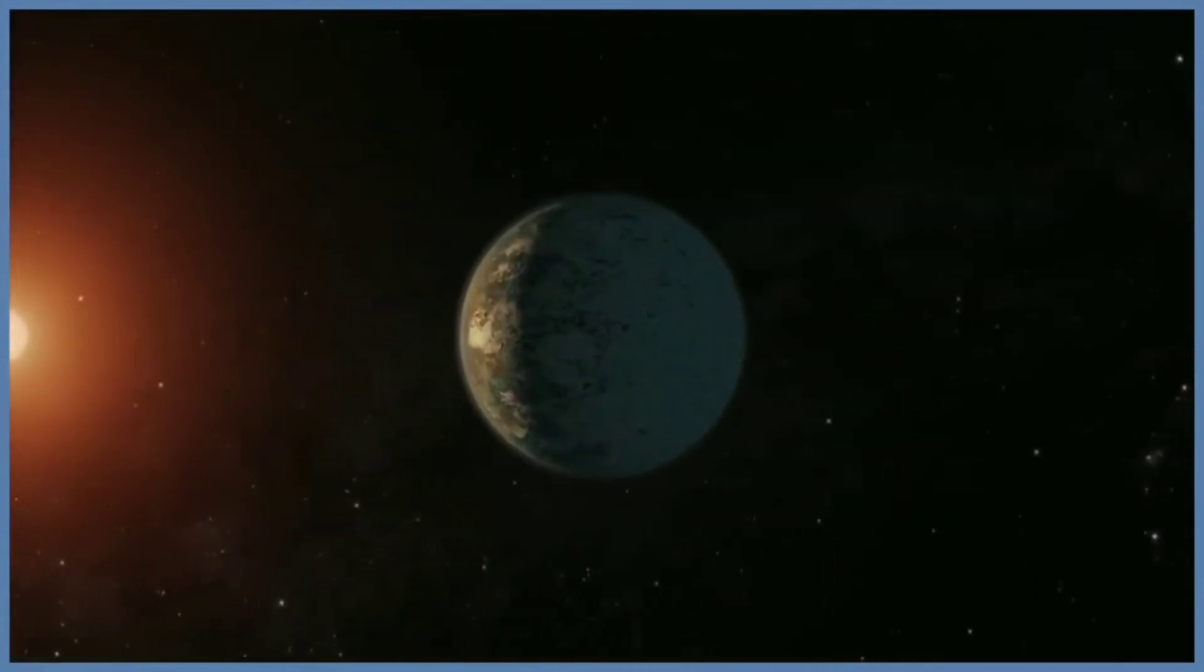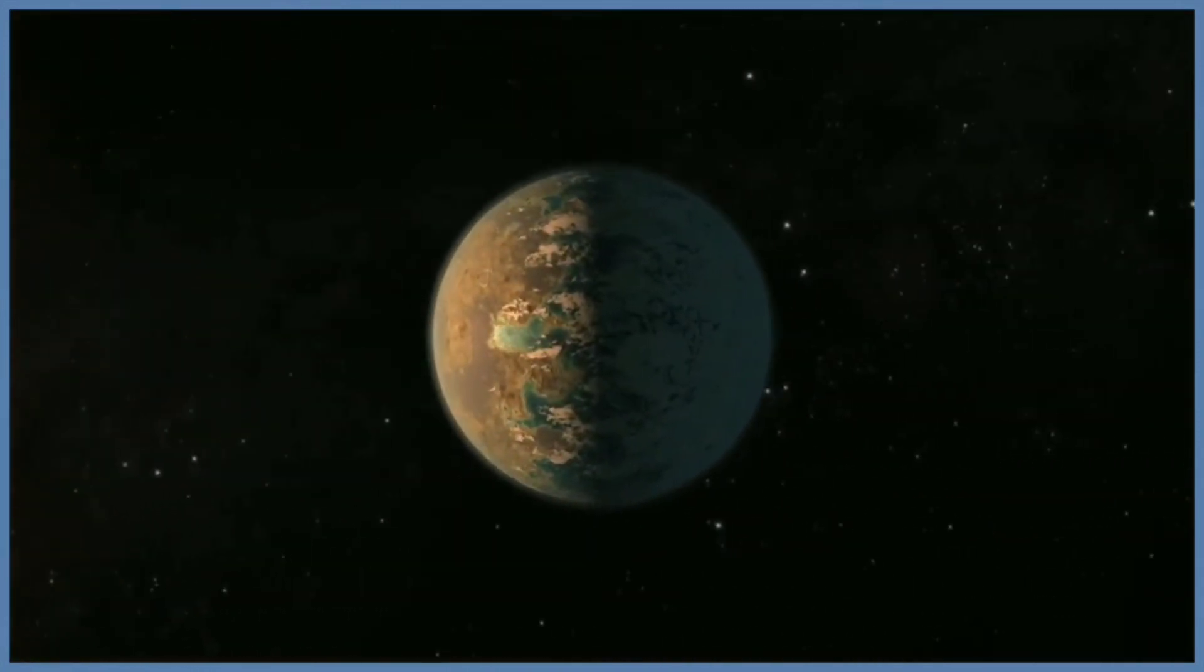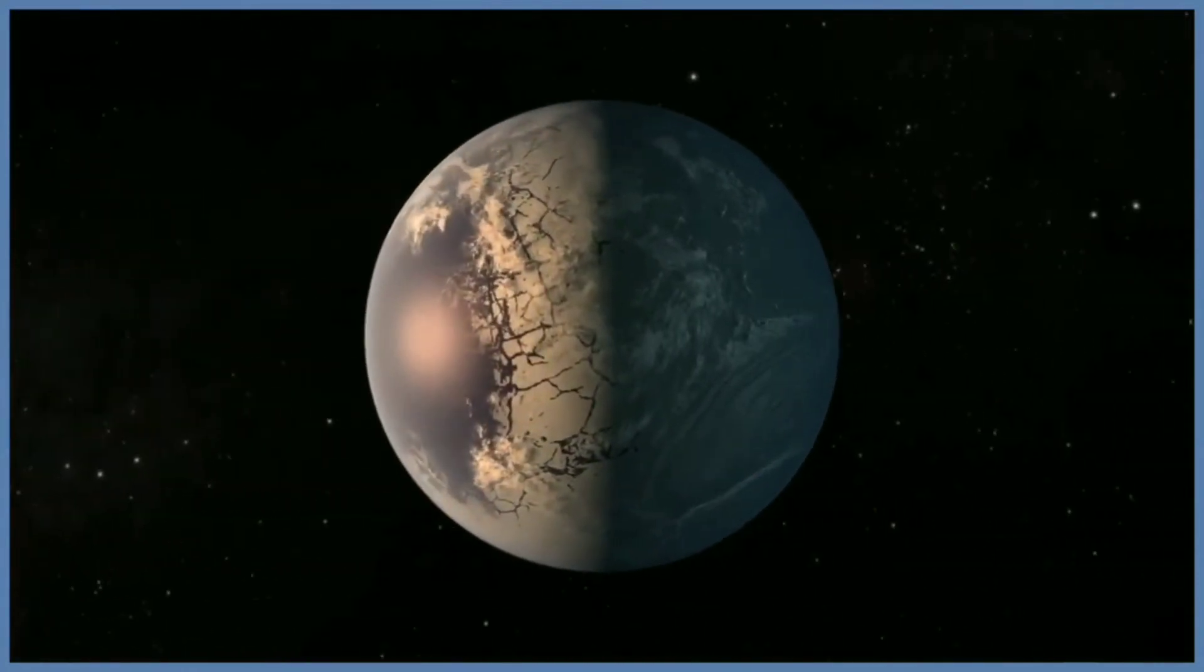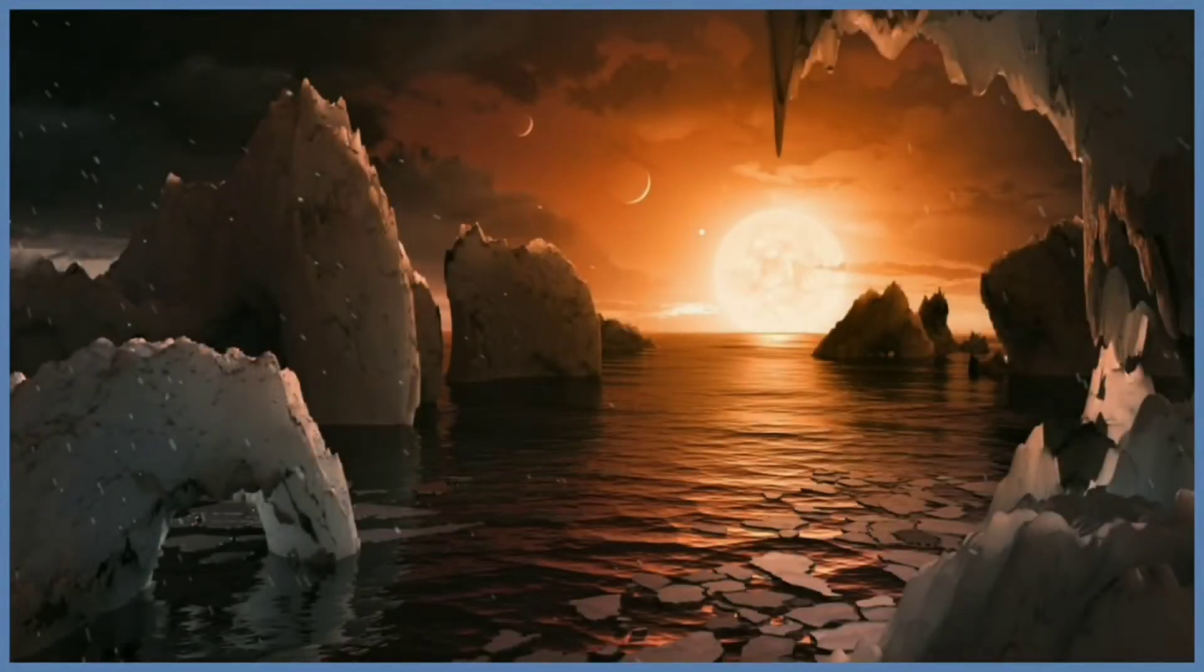The planets may also be tidally locked to their star. This means that the same side of the planet is always facing towards the star. This could potentially have very diverse weather patterns, such as strong blowing winds from the day side to the night side and extreme temperature changes.